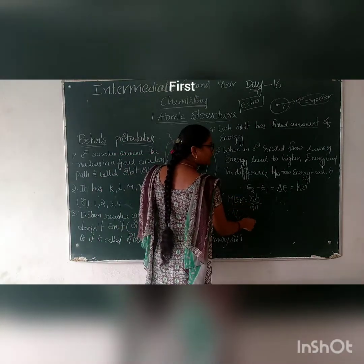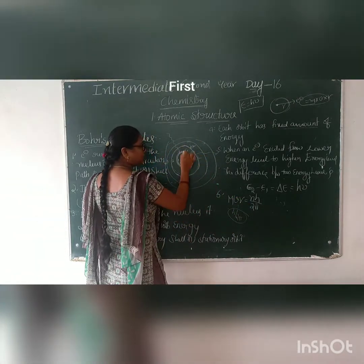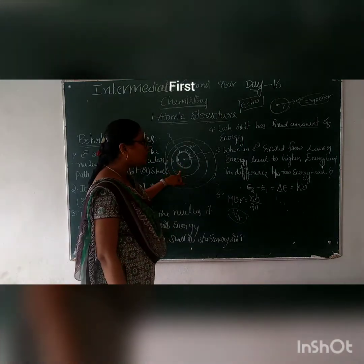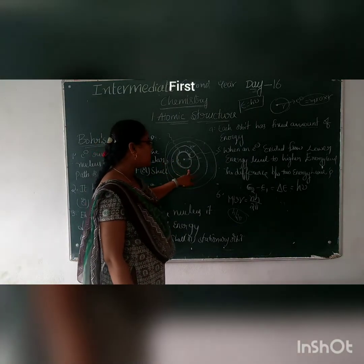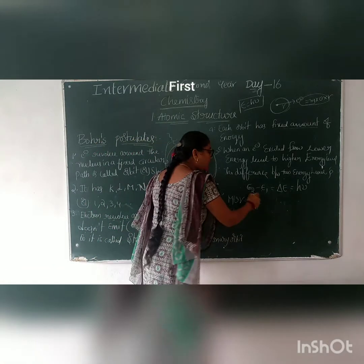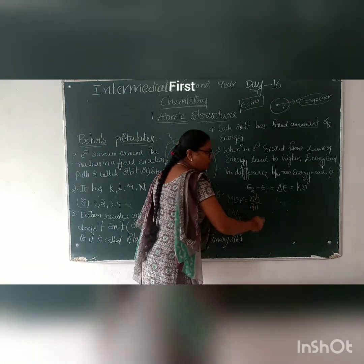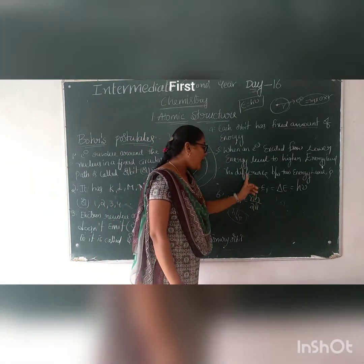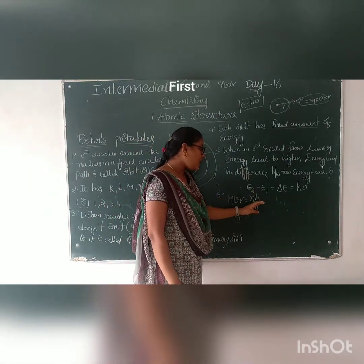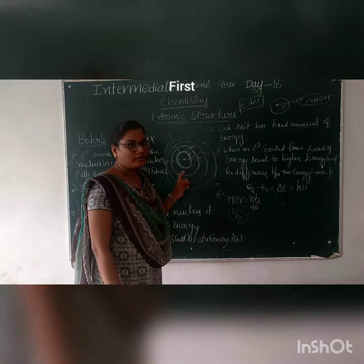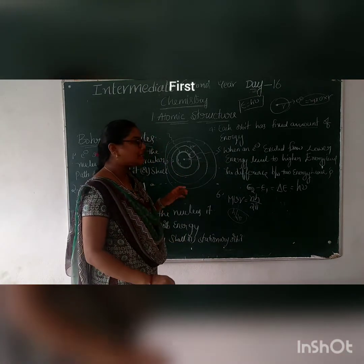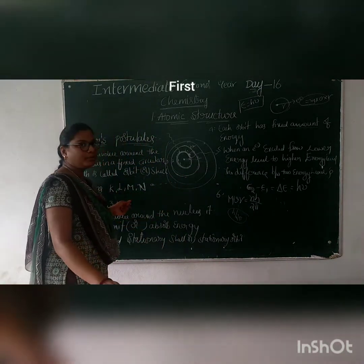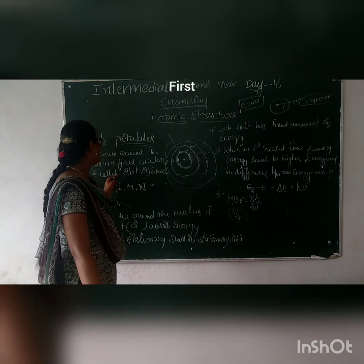The angular momentum of an electron — the electron has an angular momentum. This is the angular momentum of an electron. We have to consider the orbital path, which follows the condition mvr = nh/2π.